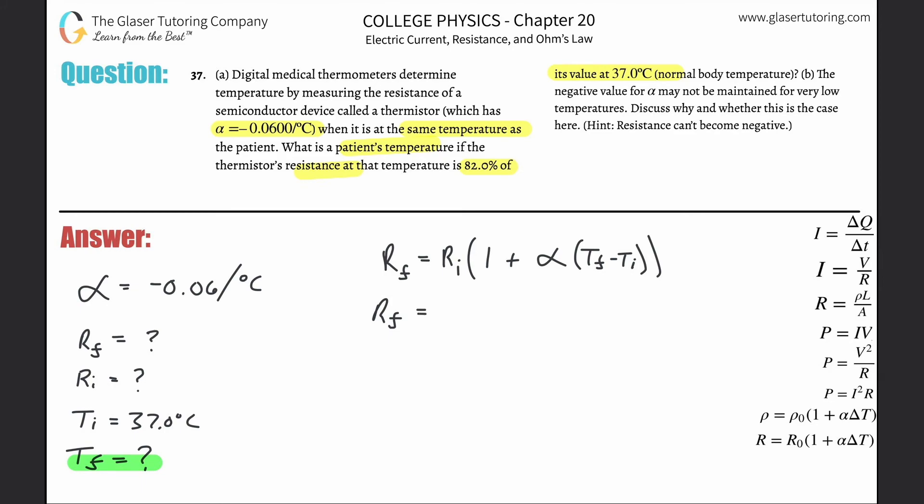There's the formula. Now let's start plugging in things that we know. I have R_f, I don't know what that is, R_i I don't know what that is, plus the alpha value, so that's negative 0.06. Let's make this math a little nicer. Instead of it being an addition, it's going to be a subtraction, multiplying it by the final temperature, which is what we are after, minus 37 degrees centigrade. We need to calculate this final temperature.